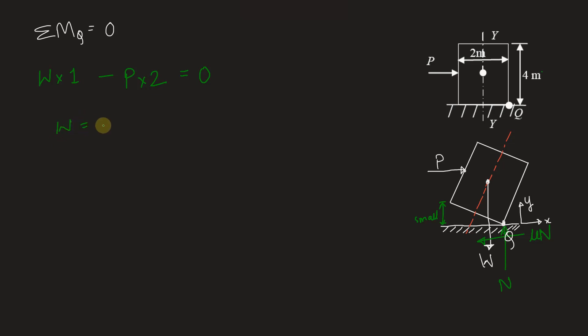W will be therefore equal to 2P or P will be equal to W by 2. Because W is known, P is unknown. So we write P is equal to W by 2. 100 kg is the mass of this wardrobe. So we can write weight is 100 into 9.81 divided by 2 which is 50 into 9.81 gives us 490.5 Newton.